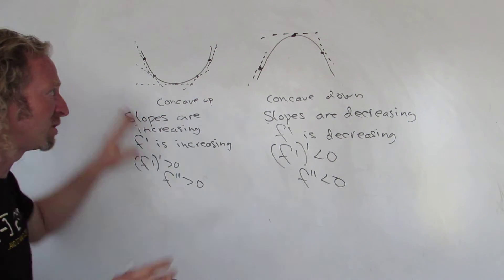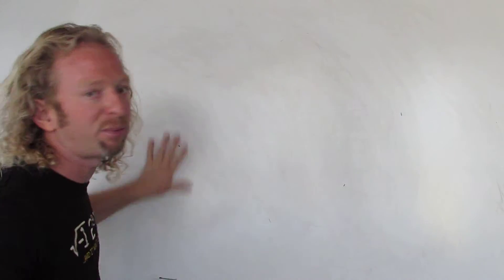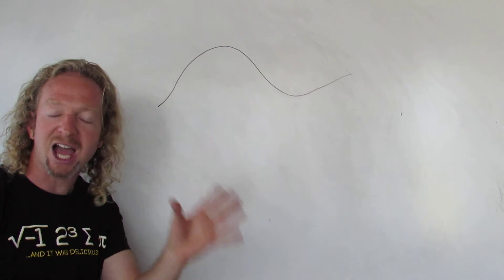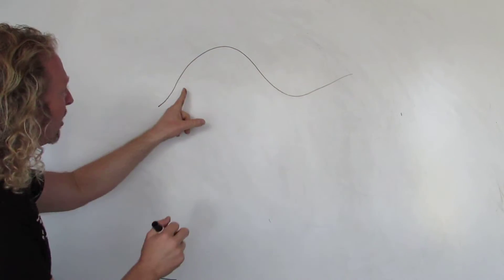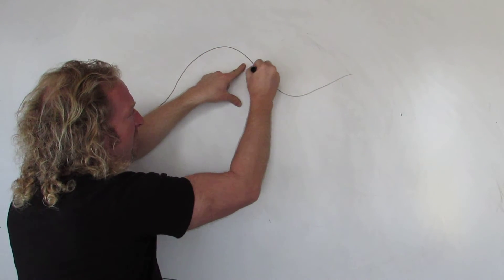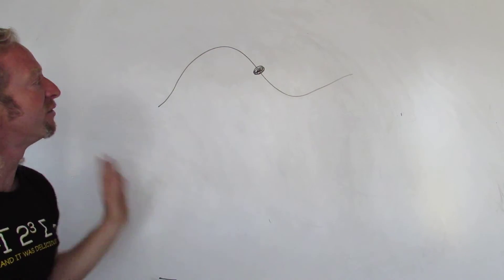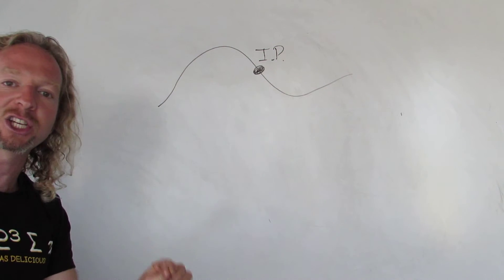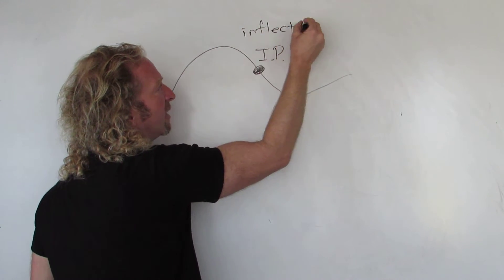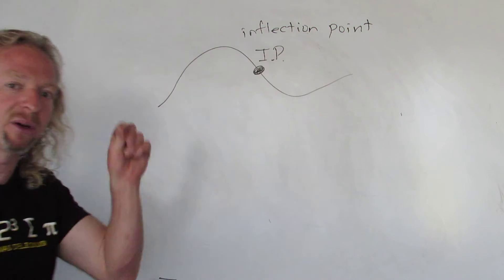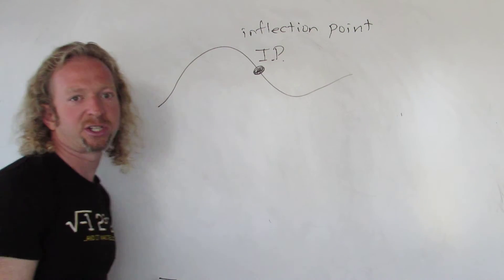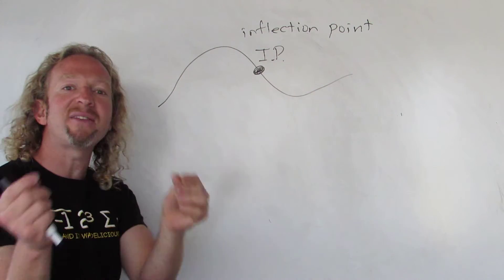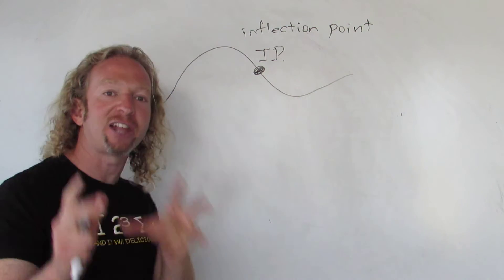Let's do a really simple example. By the way, if you have a point on the graph where the function changes from concave down to concave up, or up to down, it's called an inflection point. So if a curve is concave down and then changes to concave up at some point, that's an inflection point — it's an ordered pair, an x-comma-y. Whenever you're doing homework, the inflection point is always an ordered pair.